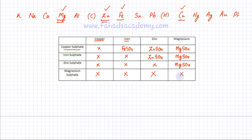In the last row: copper with magnesium sulfate — no reaction, copper is less reactive. Iron with magnesium sulfate — no reaction, iron is less reactive. Zinc with magnesium sulfate — no reaction, zinc is less reactive. Magnesium with magnesium sulfate — irrelevant reaction. In total, in 6 cases a displacement reaction occurs. If a metal is more reactive, a displacement reaction will occur.